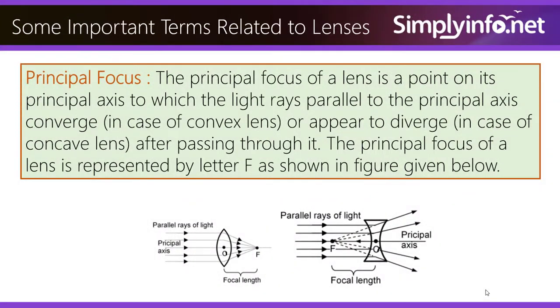Principal Focus. The principal focus of a lens is a point on its principal axis to which the light rays parallel to the principal axis converge in case of convex lens or appear to diverge in case of concave lens after passing through it. The principal focus of a lens is represented by letter F as shown in the figure given below.